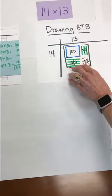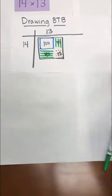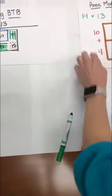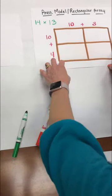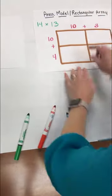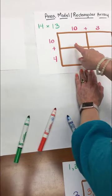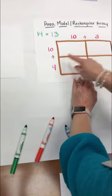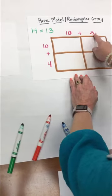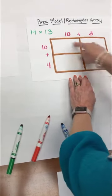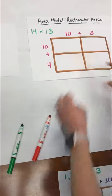Alright so now let's connect our drawings of our base 10 blocks to our area model. Again we have that same square or rectangle shape. We have our factors. We're going to think of this as a 2 by 2. So we have 10 plus 14 and then 10 plus 3. So we have our 4 boxes to make our 2 by 2.